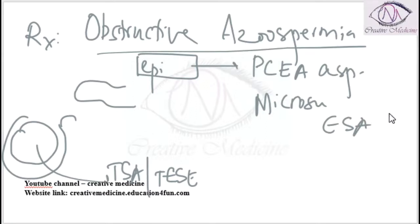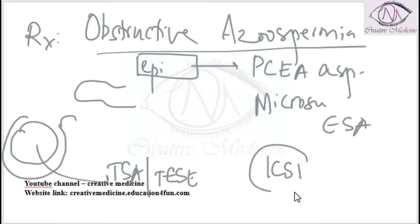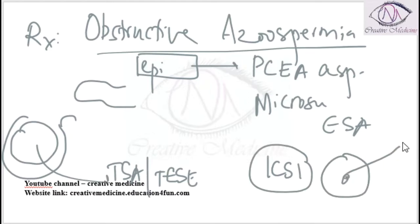With these four techniques you will get the sperm. This sperm is then injected intracytoplasmically into the ovum, which is called intracytoplasmic sperm injection (ICSI).